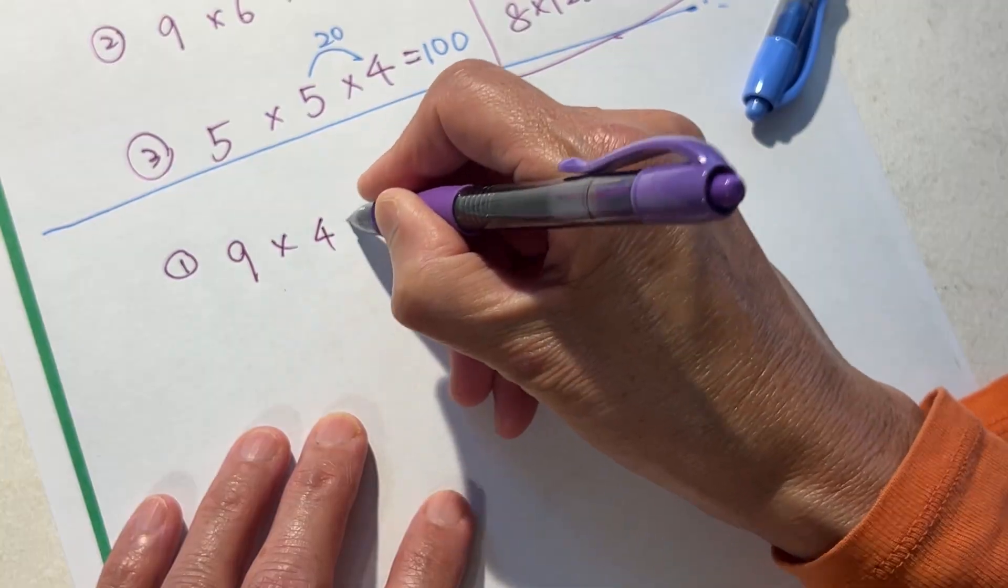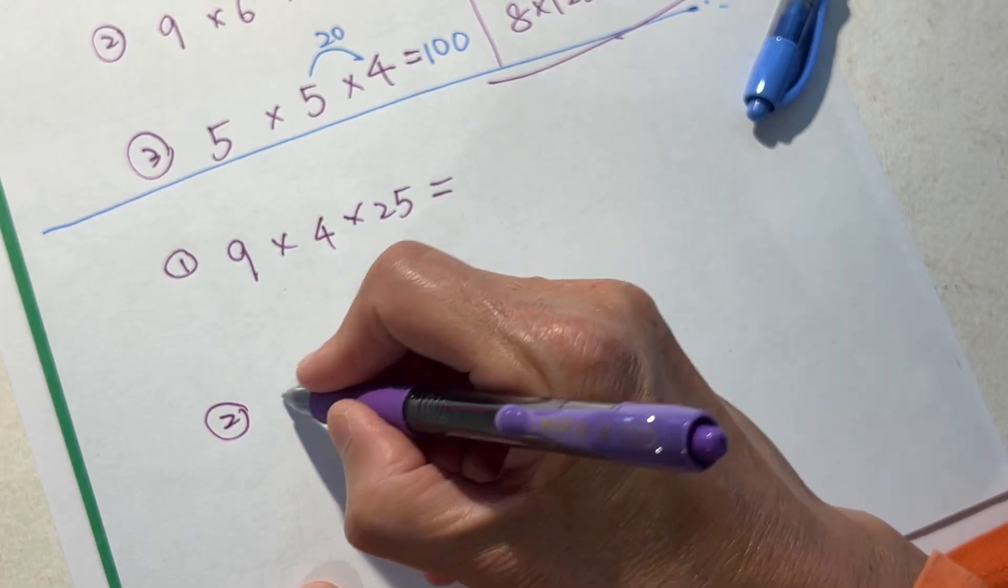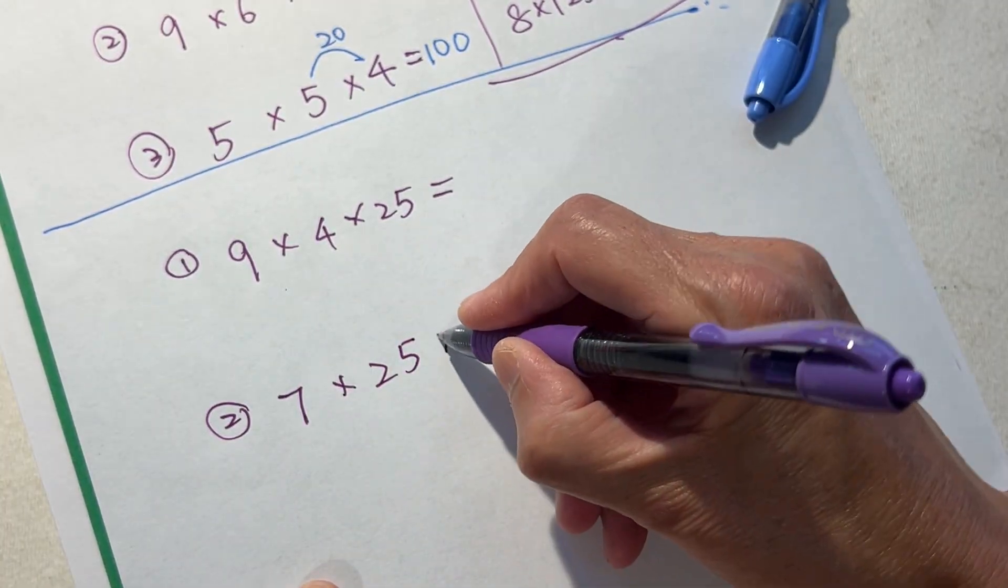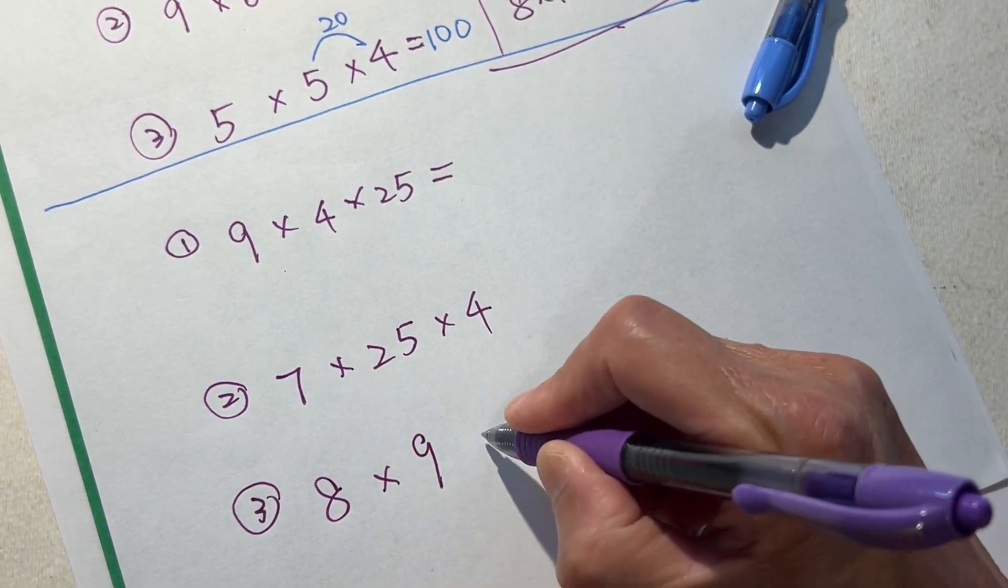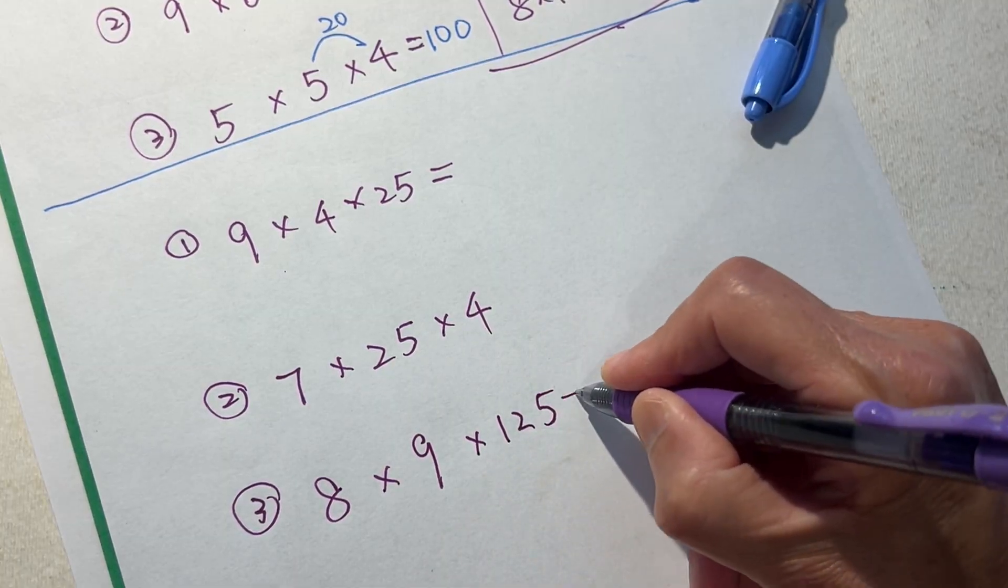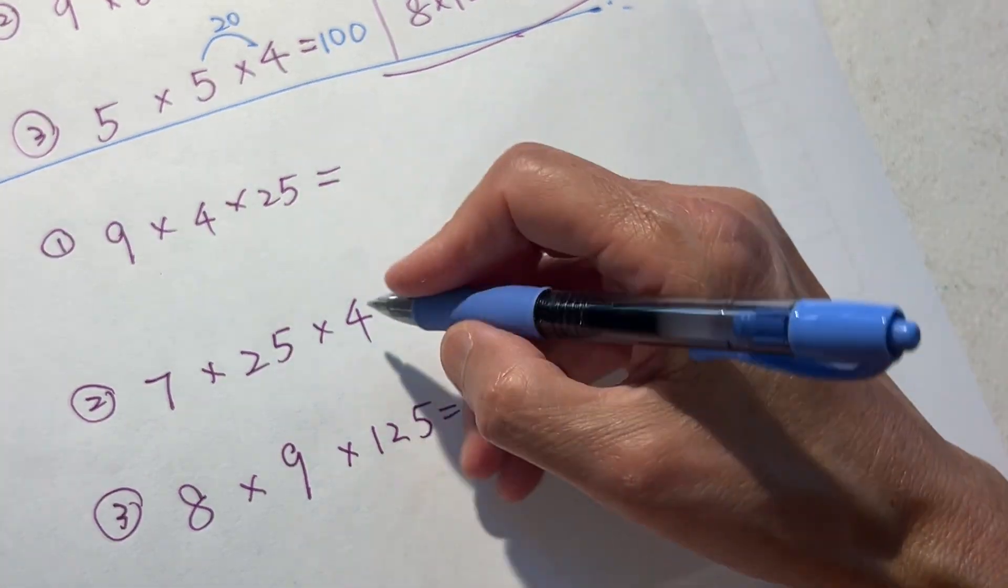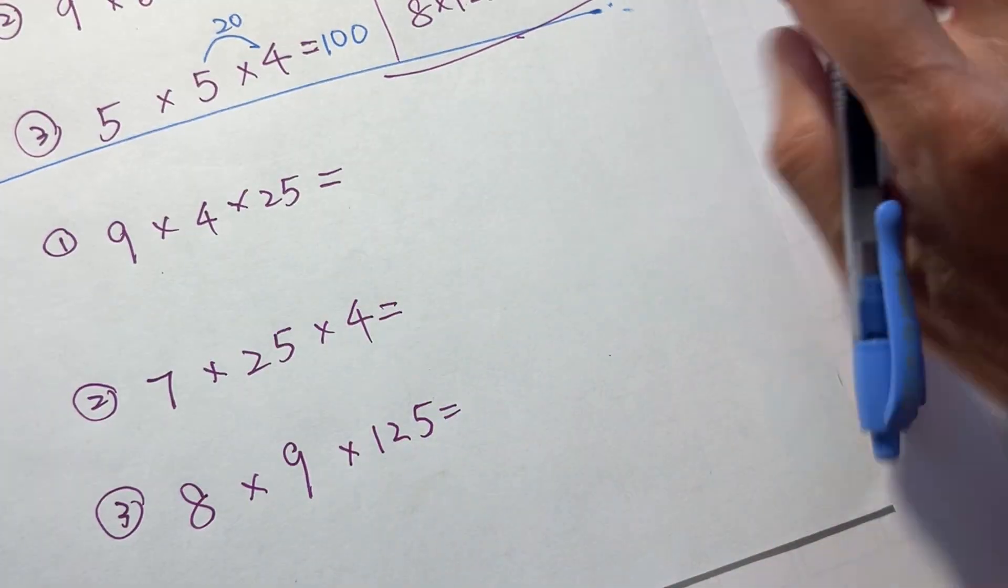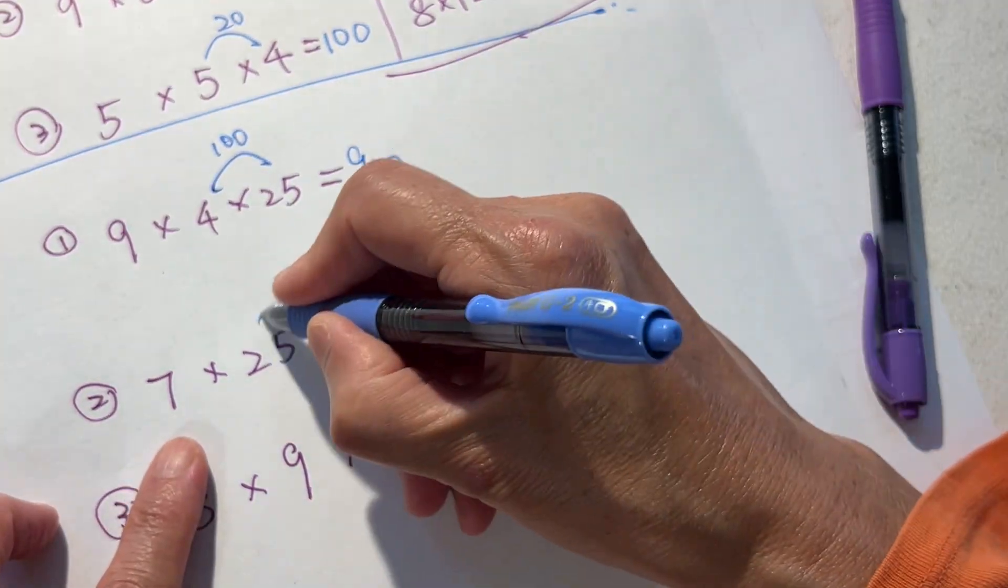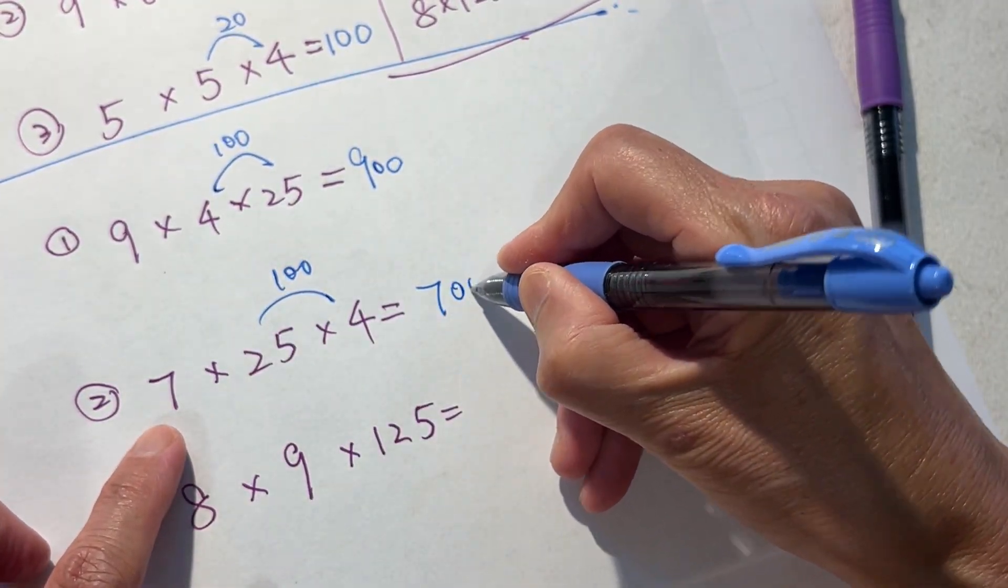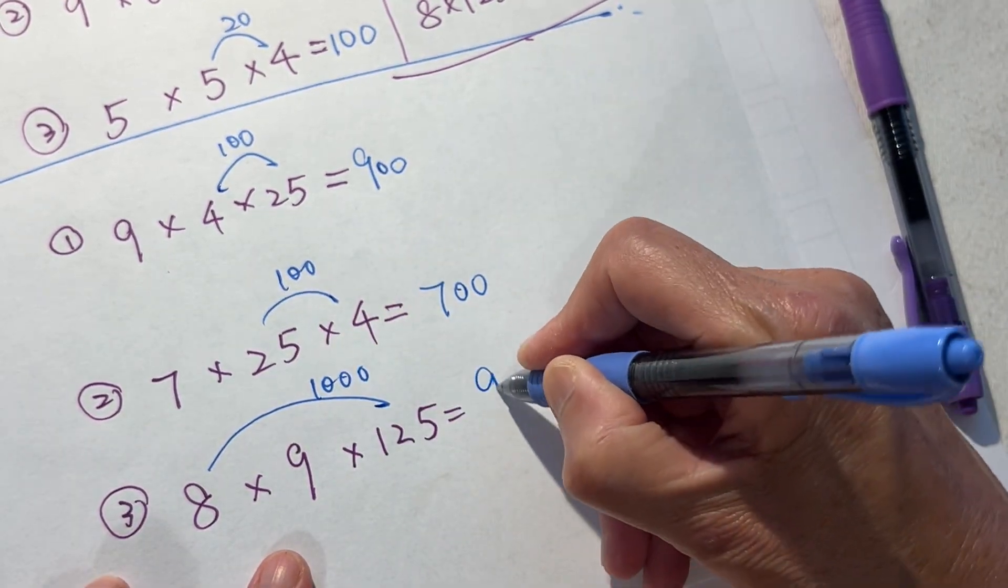9×4×25, 7×25×4, 8×9×125. Okay, three is good enough. This makes one hundred, nine, two zero.